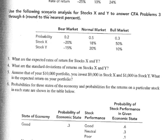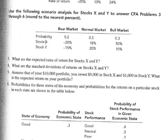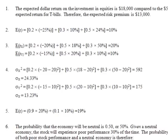Problem number three: use the following scenario analysis for stocks X and Y to answer CFA problems 3 through 6. Again, you have three possible states — bear, normal, and bull — with a probability distribution and the return in each state for stock X and stock Y. What are the expected rates of return for stocks X and Y? This is very straightforward: just take the weighted average for stock X and the weighted average for stock Y.